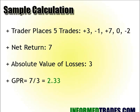Then you look at the losses: there's a loss of $1 and a loss of $2. You take the absolute value of that — 1 plus 2 equals 3. Absolute value means you ignore the negative sign and just add up the numbers. Then you take the net return, 7, and divide it by the absolute value of the losses, 3, and you get a gain-to-pain ratio of 2.33.